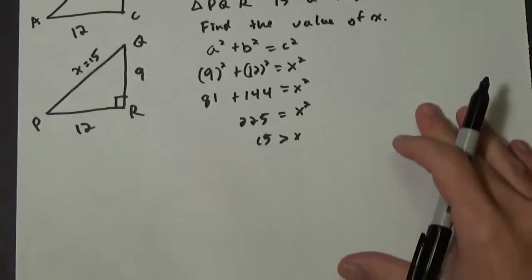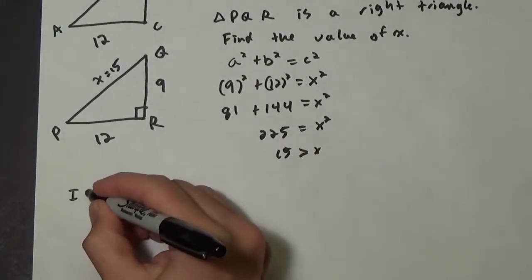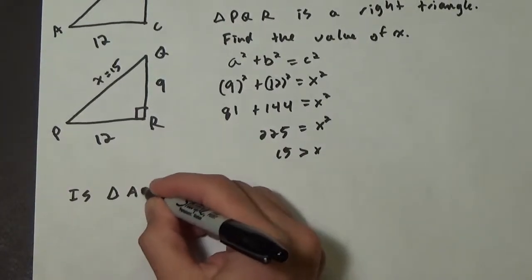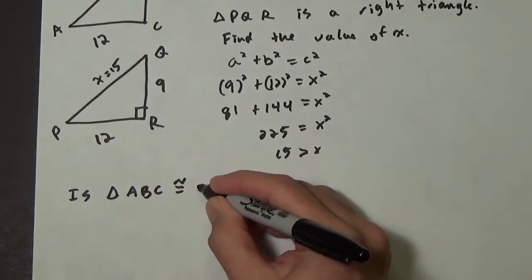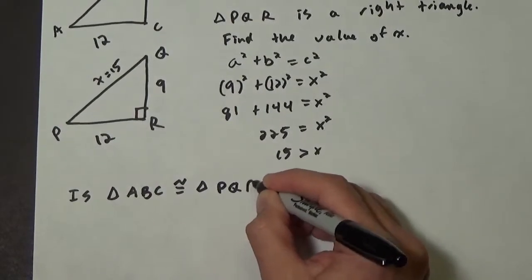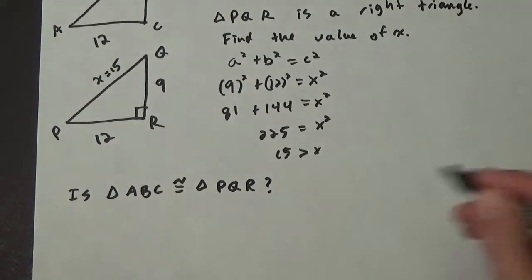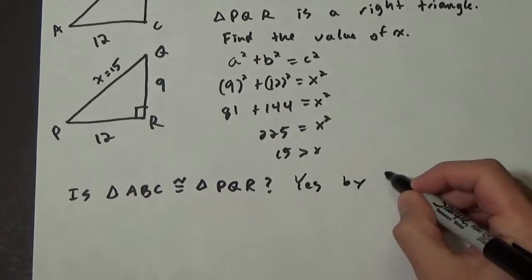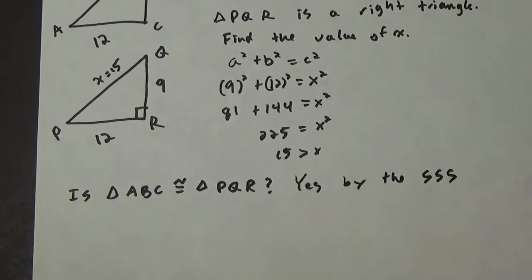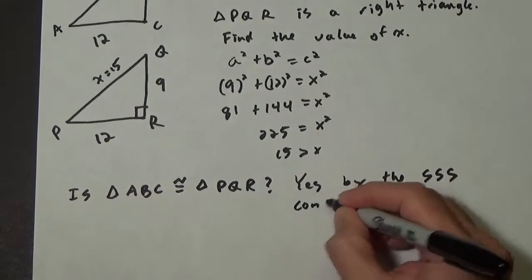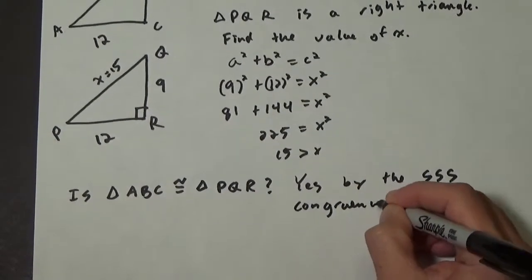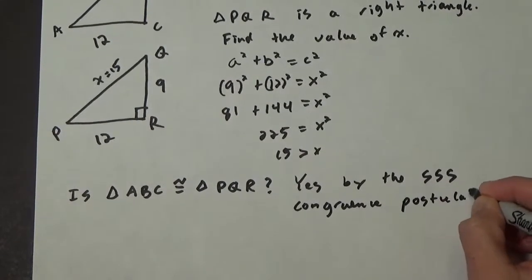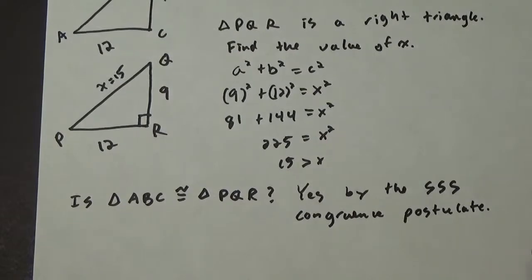Now that x equals 15, we're going to compare the two triangles. Is triangle ABC congruent to triangle PQR? The answer is yes, by the Side-Side-Side congruence postulate. There are a number of ways to prove triangles congruent — SSS, SAS, ASA, and so on — and Side-Side-Side was probably the first one you studied.